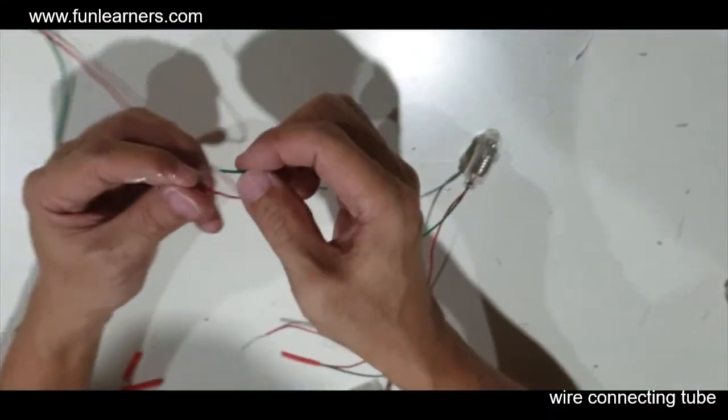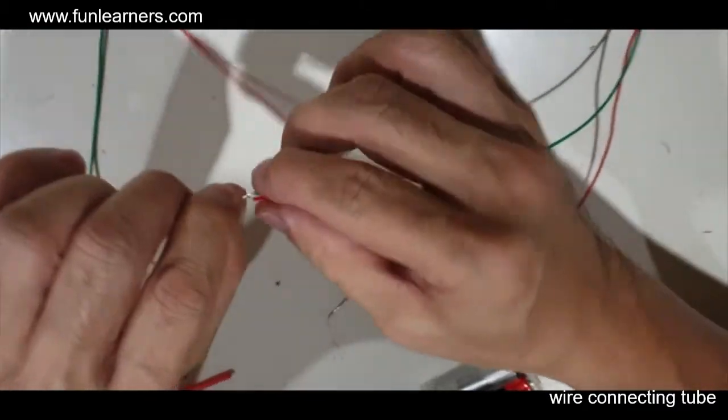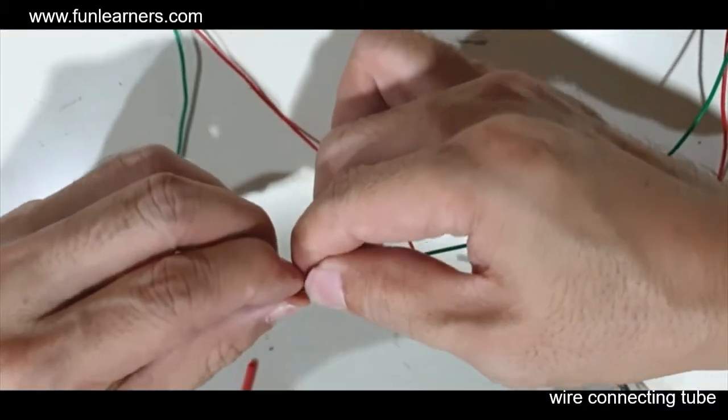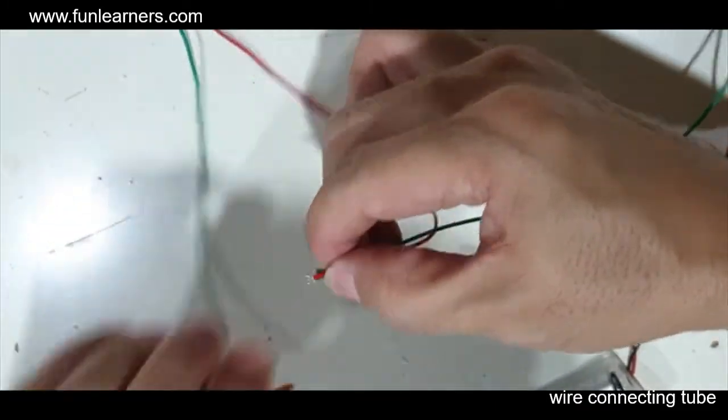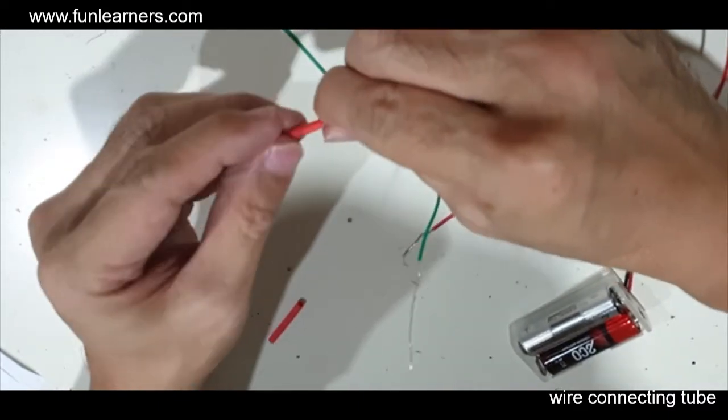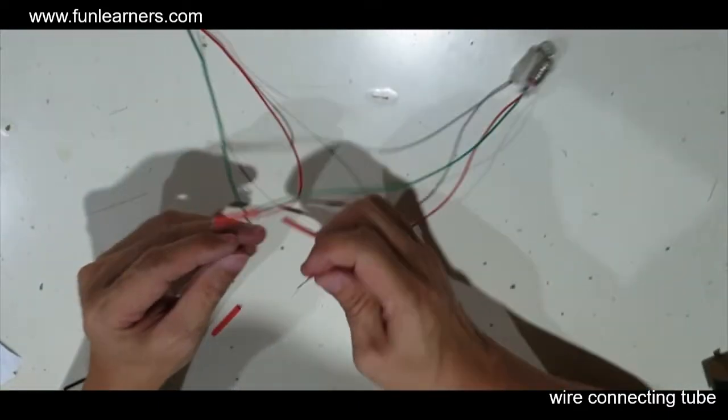Then all this tube. Bend the wire and use this to push through, so this wire is connected now. And then the last part.